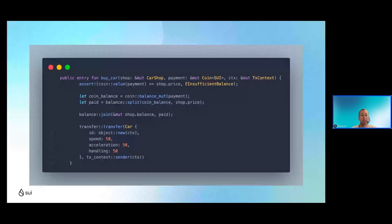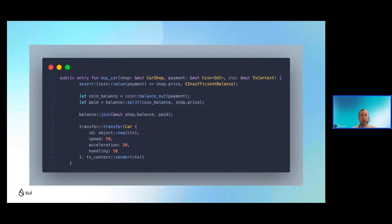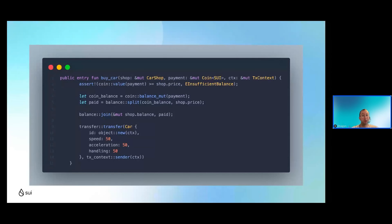Now let's look at the 'buy_car' function arguments. It takes a mutable reference to the car shop — because we're ultimately increasing its balance — a mutable reference to the payment coin, and the transaction context because it's creating and minting a new car object to the sender. The first line is a simple assertion: assert that the value of the payment coin is greater than or equal to the price of the car — making sure you have at least enough Sui to cover the car price.